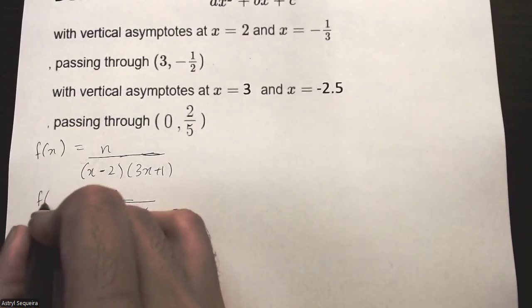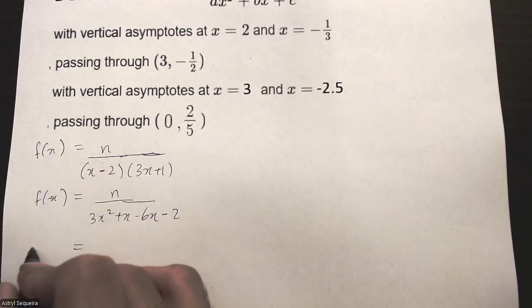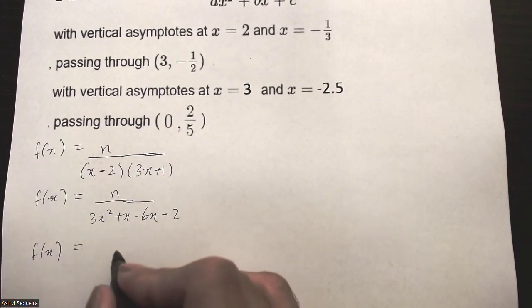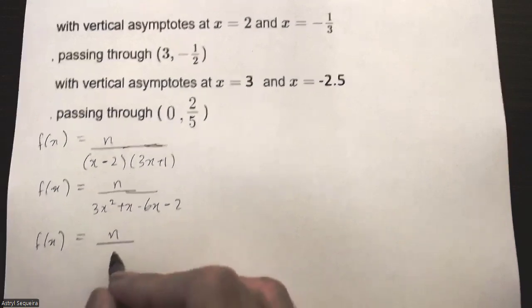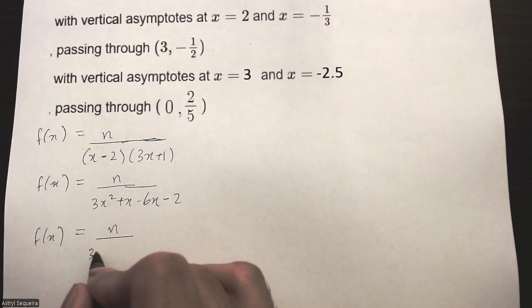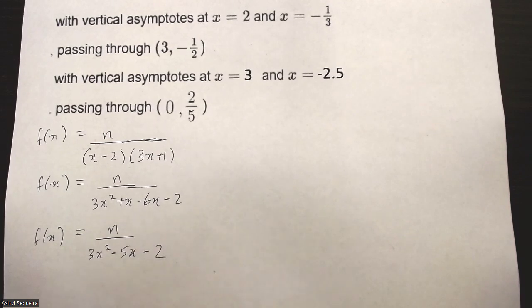You can write the f(x) here as well. So it's just n over 3x squared minus 5x minus 2.